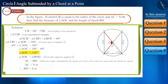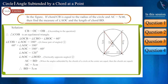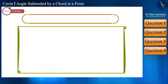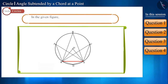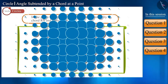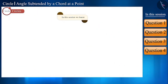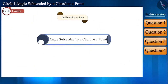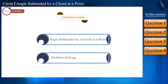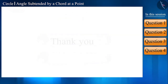Thus, we obtain the measure of angle AOC as 120 degrees and the length of chord BD as 5 cm. Before we go, here is a question for you: in the given figure, identify the angles subtended by chord RS and name them. That's all in this session. Today, we solved a few questions based on angles subtended by a chord at a point. See you in the next video. Thank you.